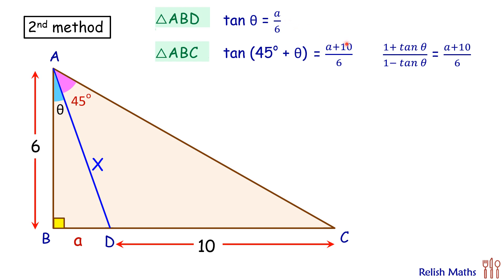We'll get 1 plus a by 6 upon 1 minus a by 6 equals a plus 10 upon 6. Simplifying it, so in LHS taking LCM as 6, LHS becomes 6 plus a upon 6 minus a equals a plus 10 upon 6. Now when we'll do cross multiplication and simplifying this we'll get a quadratic.